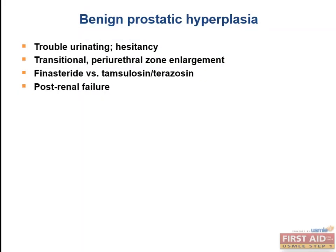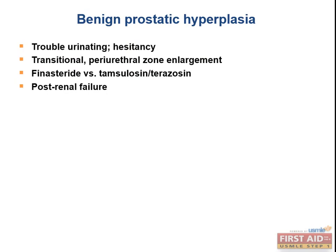Drugs treating BPH include finasteride, a 5-alpha reductase inhibitor — that enzyme normally converts testosterone to dihydrotestosterone (DHT), the more potent form. DHT is implicated in BPH progression, so finasteride decreases DHT synthesis. Tamsulosin and terazosin are alpha-1 antagonists. They can both improve BPH symptoms and lower blood pressure, with a stronger effect on the prostate than other alpha-1 antagonists like prazosin, phentolamine, or phenoxybenzamine.